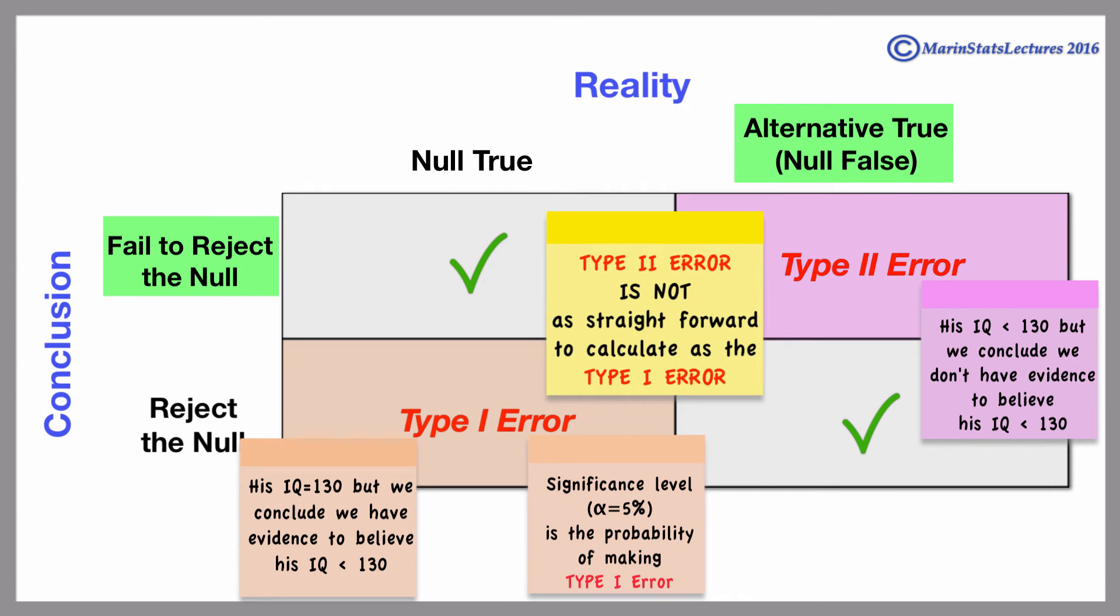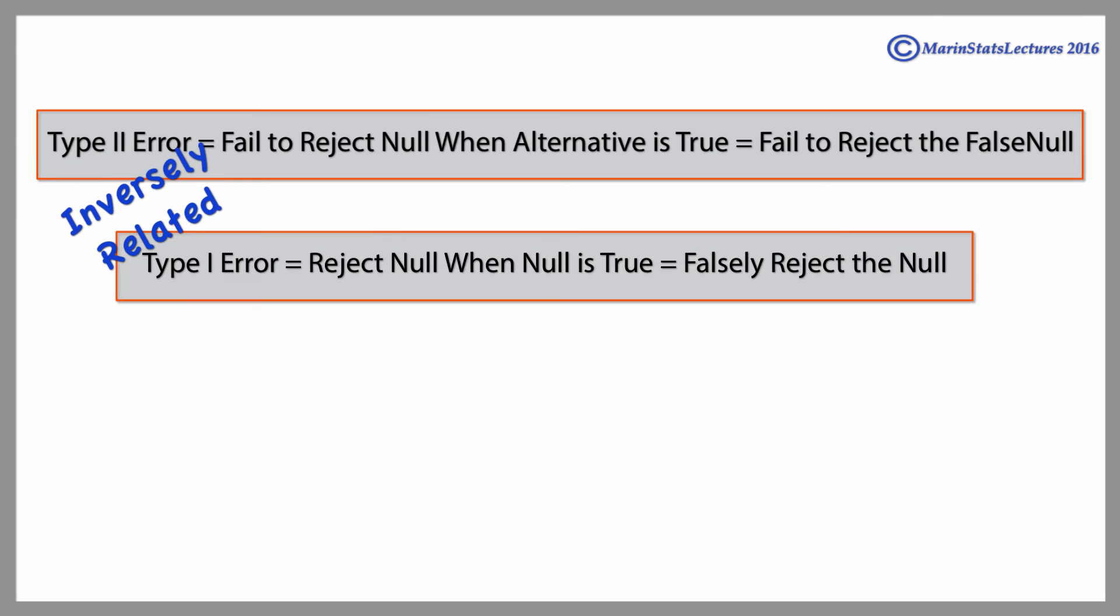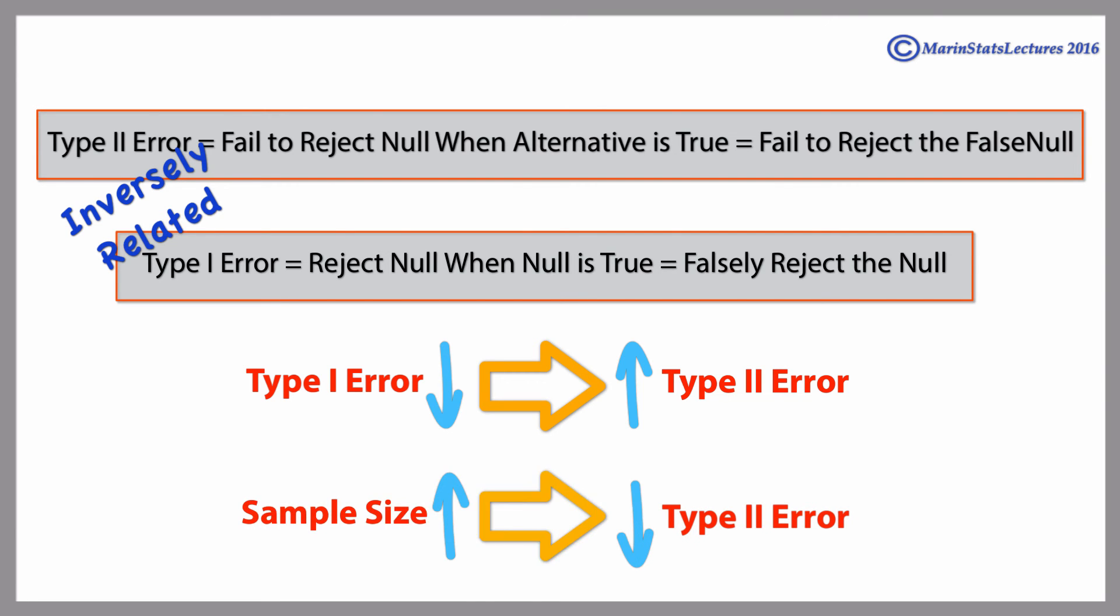The type 2 error rate is not as straightforward to calculate as the type 1 error rate. It is inversely related to the type 1 error rate, and decreasing the type 1 error rate would increase the type 2 error rate. You can also decrease the type 2 error rate by increasing the sample size.